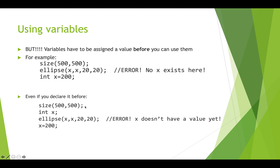Similarly, even if we create the box without putting a value in it, and then try to use it before assigning a value, that will also cause an error. Processing will create the canvas, create the box in memory, and then come to the line that uses 'x' — but there's nothing in the box. So we've got to put a value in before we try to use the variable.